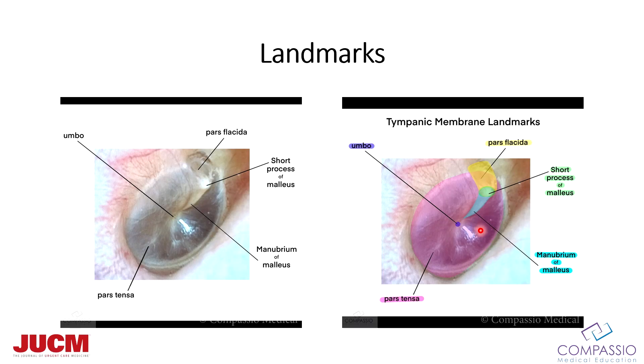This is normal anatomy we're going to start with. The pink is the pars tensa — it's a little bit more taut. The yellow is pars flaccida. That central depression is the umbo. And here's our light reflex right here. Truth be told, whether or not the light reflex is present or not, it doesn't really tell me much.